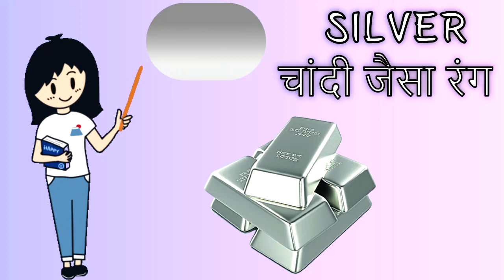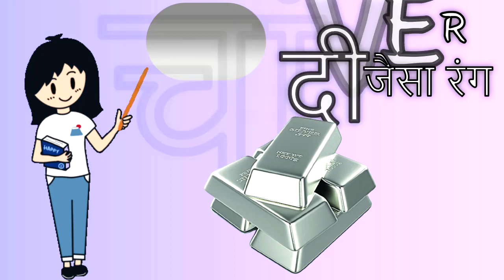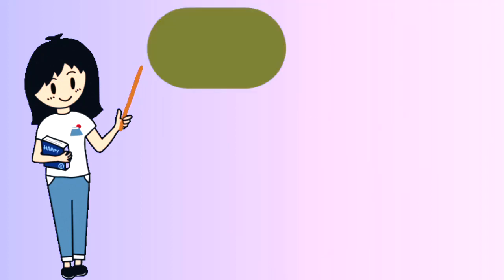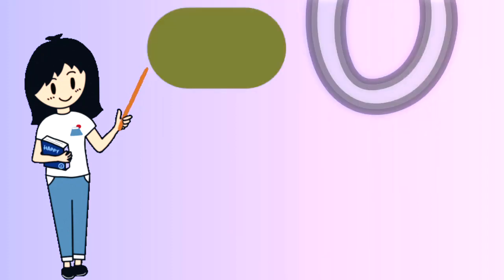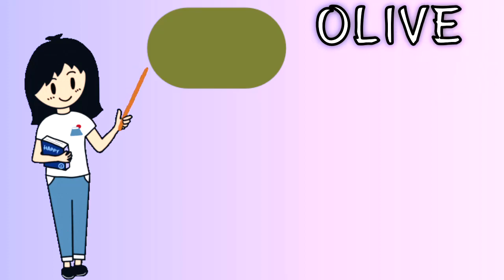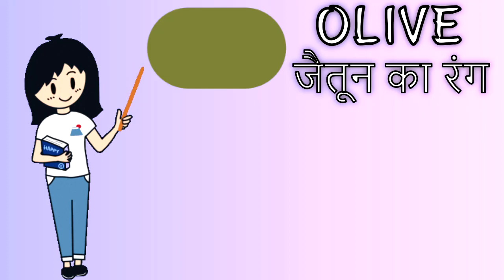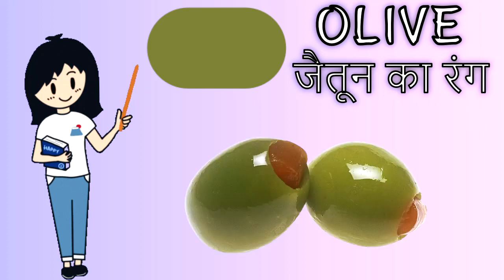Next one is olive. O-L-I-V-E. Olive means jaitun ka rang. Olive like green olive.